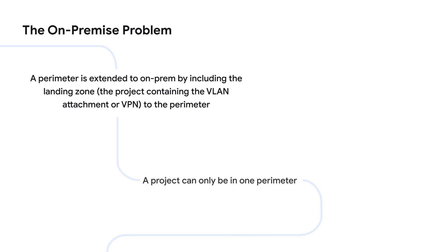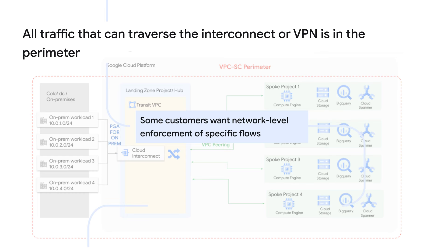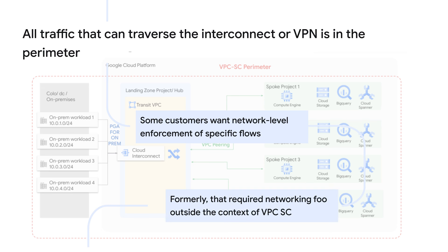But there are two caveats to this design that impact some customers, especially those in highly regulated industries. Remember, a given project can only be in one VPCSC perimeter. The first caveat is that any workload traversing that connection is in the perimeter. Some customers want to isolate which workloads from on-prem can access those perimeterized resources at the network level. It can be done, but previously it required networking controls independent of VPCSC.